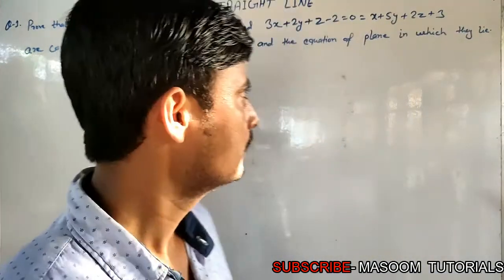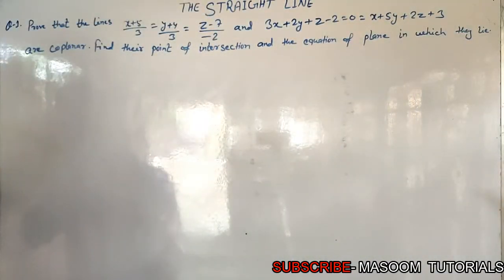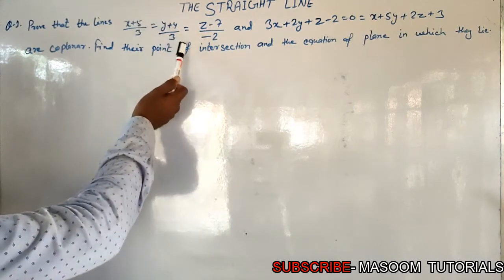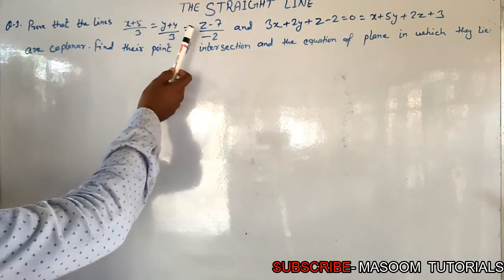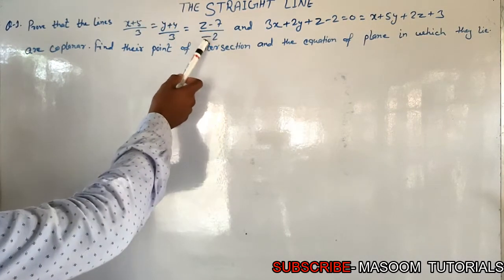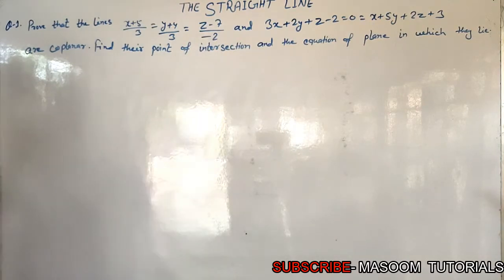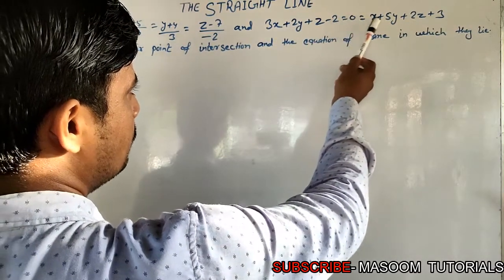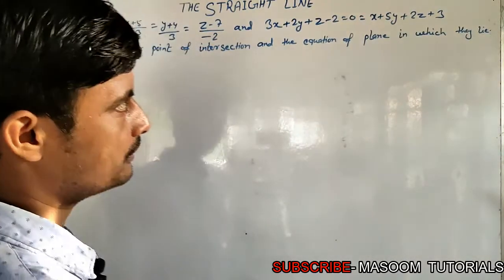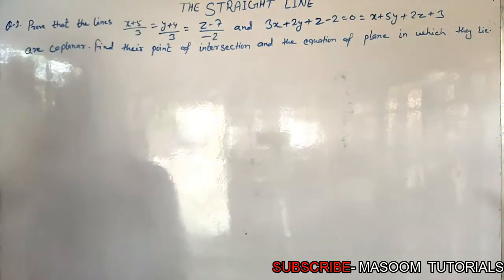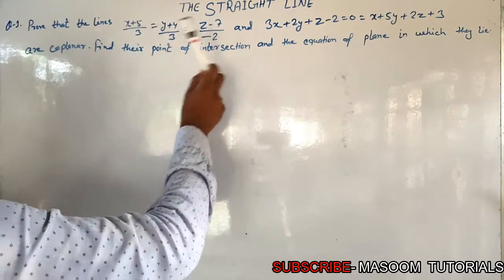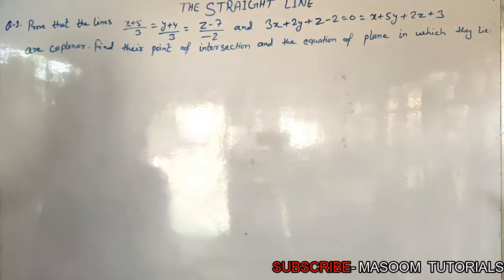Stay with me. The question is: prove that the line x plus 5 by 3 is equal to y plus 4 by 3 is equal to z minus 7 by minus 2, and 3x plus 2y plus z minus 2 equals 0, equals x plus 5y plus 2z plus 3 equals 0. This first equation is the first line and this is the second line.